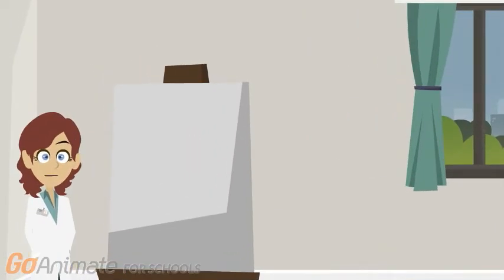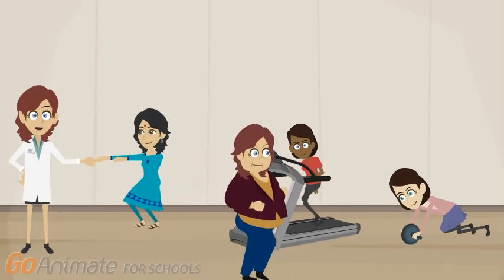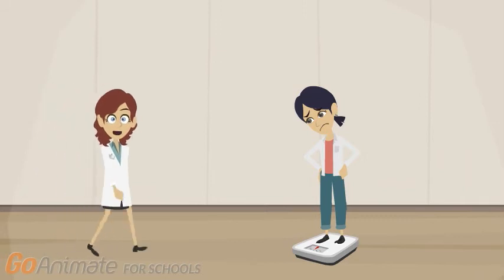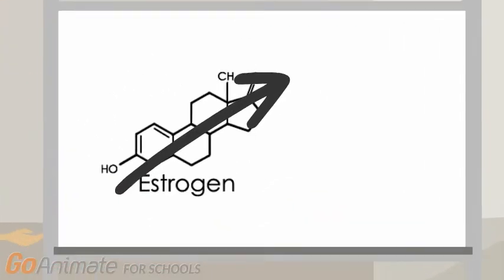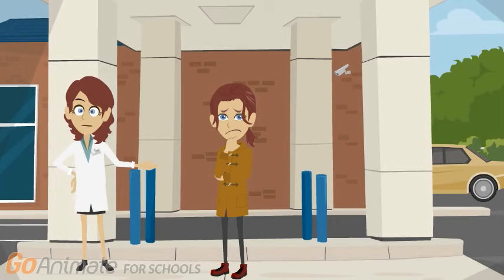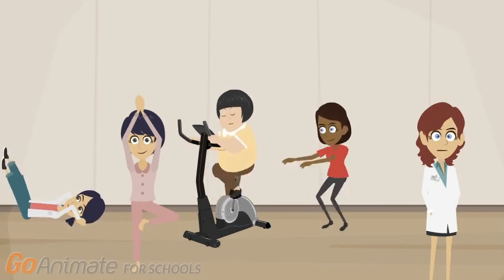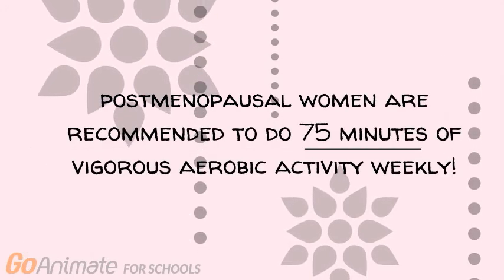But don't worry — there are many things you can do to reduce your risk of breast cancer. In fact, 1 in 3 cases can be avoided by taking preventative measures and maintaining a healthy lifestyle. Maintaining a healthy weight is very important, especially post-menopause, as being overweight can result in high estrogen levels due to having excess fat cells. Reduced consumption of alcohol is another preventative action, since alcohol decreases the body's ability to break down estrogen, which increases risk. You should also avoid smoking, which has been linked with increased risk. Increasing physical activity has also been seen to lower estrogen levels as well as reducing tumor-promoting factors. For post-menopausal women, it is recommended to do 75 minutes of vigorous aerobic activity weekly.